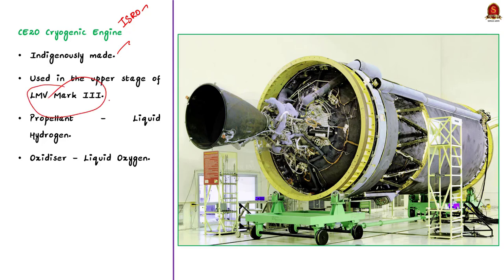The LMV3 has three stages: a solid first stage, a liquid second stage, and a cryogenic third stage. The CE20 cryogenic engine is used in the upper stage of LMV MK3. This engine also uses liquid hydrogen as fuel and liquid oxygen as oxidizer.